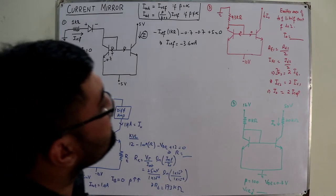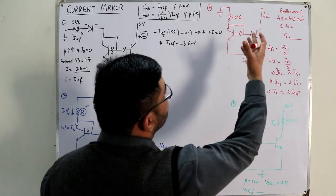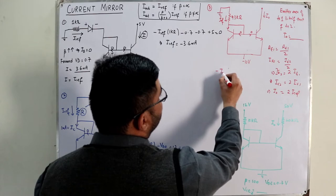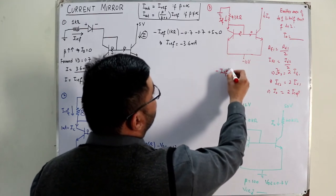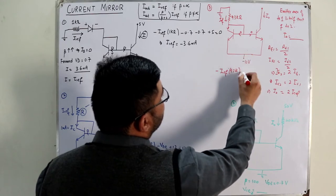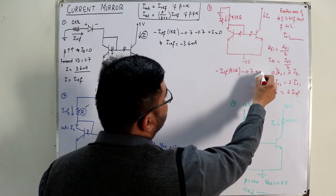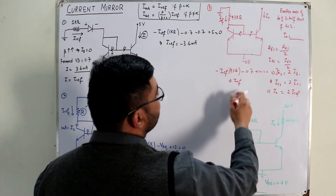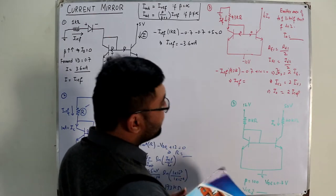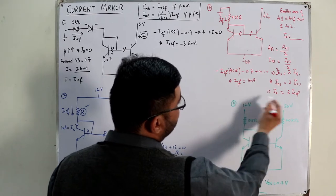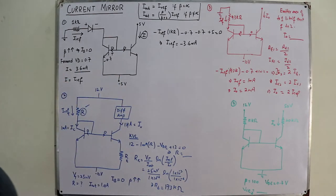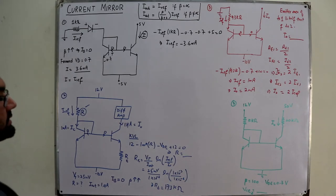To find I_reference, apply KVL: negative I_reference times 9.3 kΩ minus VBE of 0.7 equals negative 10 V, giving plus 10 minus 9.3 kΩ × I_reference minus 0.7 equals zero. Solving this, I_reference comes out to be 1 milliampere. Therefore I_output equals 2 times I_reference, giving I_output equal to 2 milliamperes.